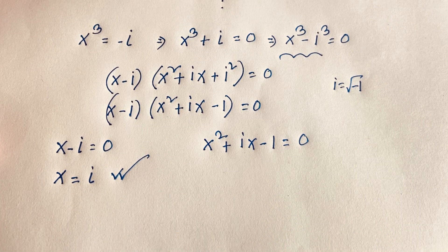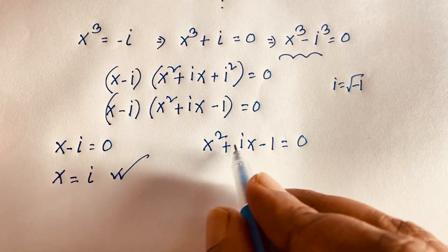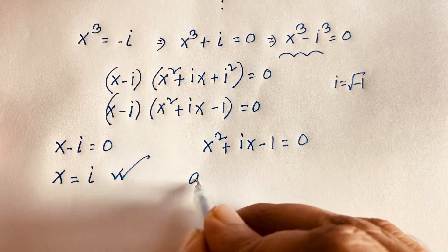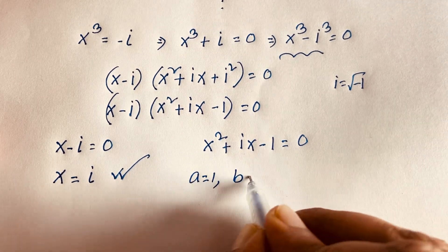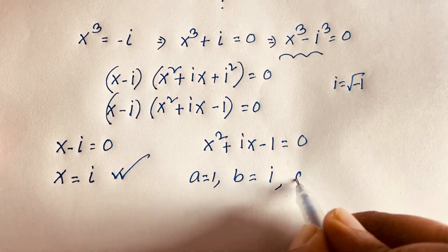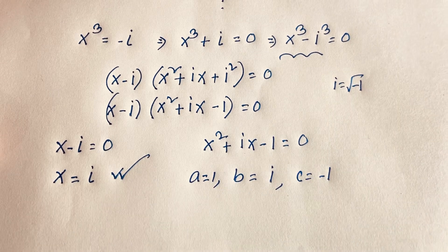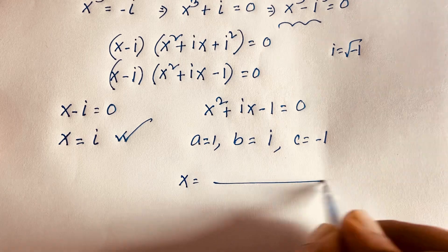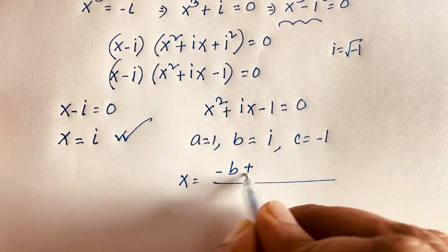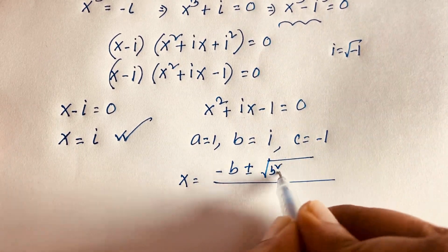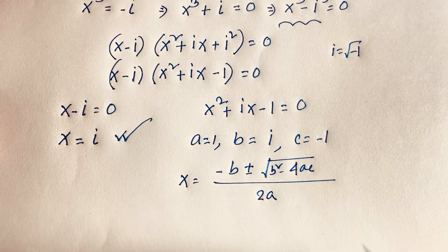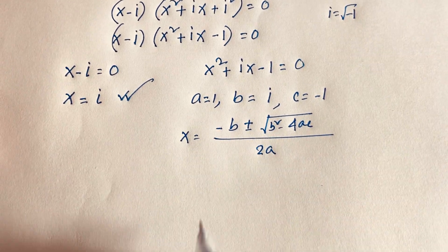So x equals i is our first answer. But from the quadratic expression we are finding two more solutions. Here a equals 1, b equals i, and c equals negative 1. We apply the quadratic formula: x equals negative b plus or minus square root of b squared minus 4ac, all over 2a.